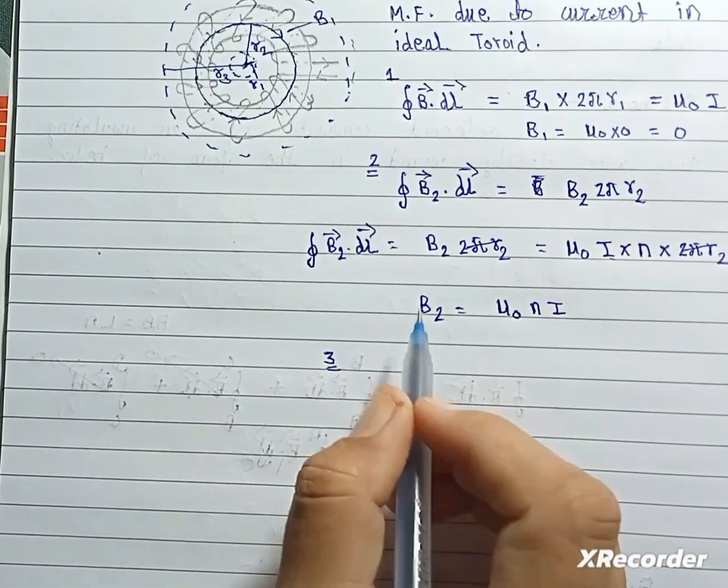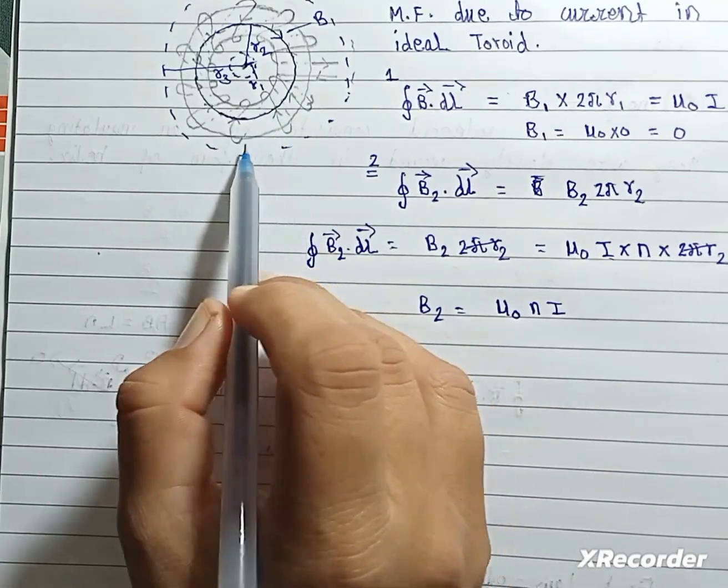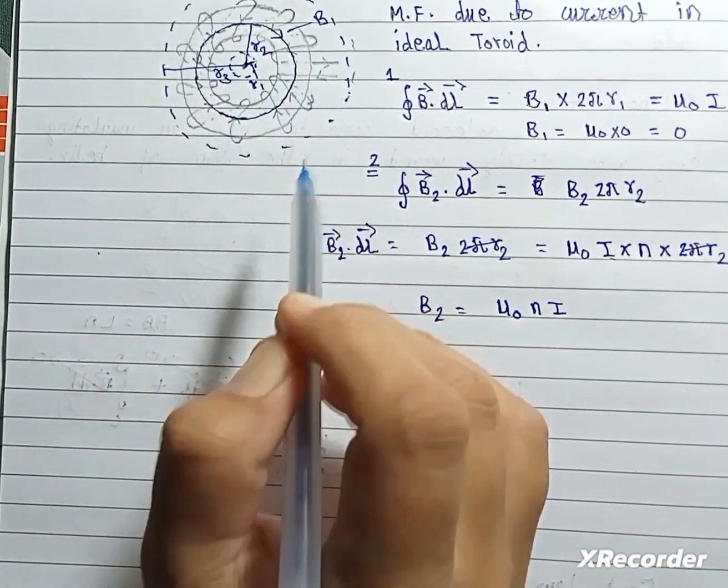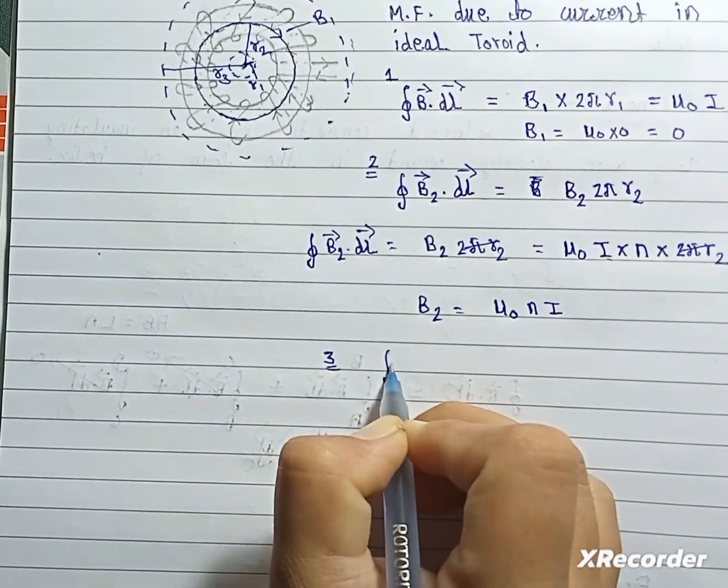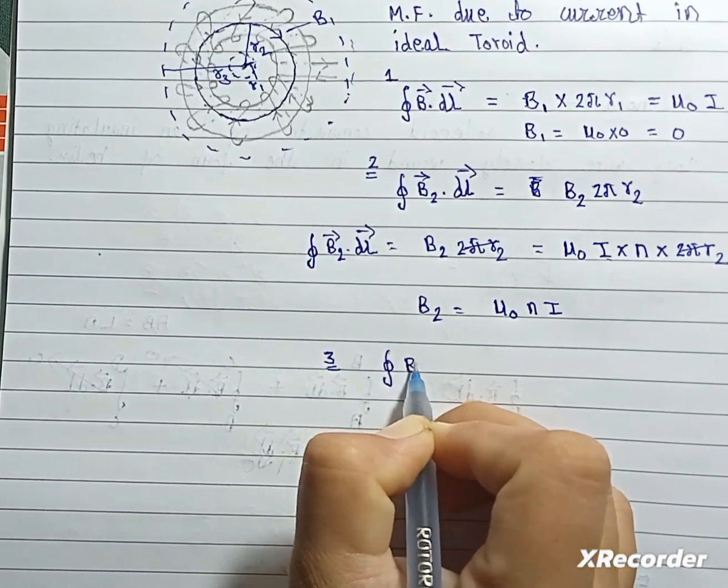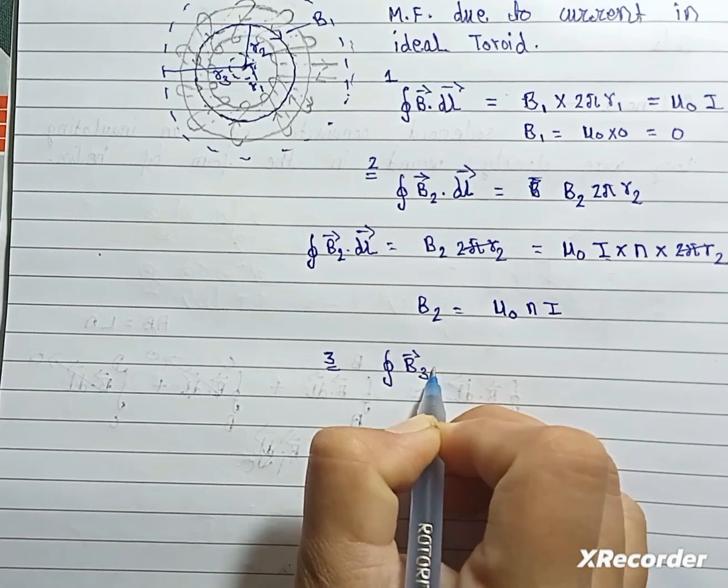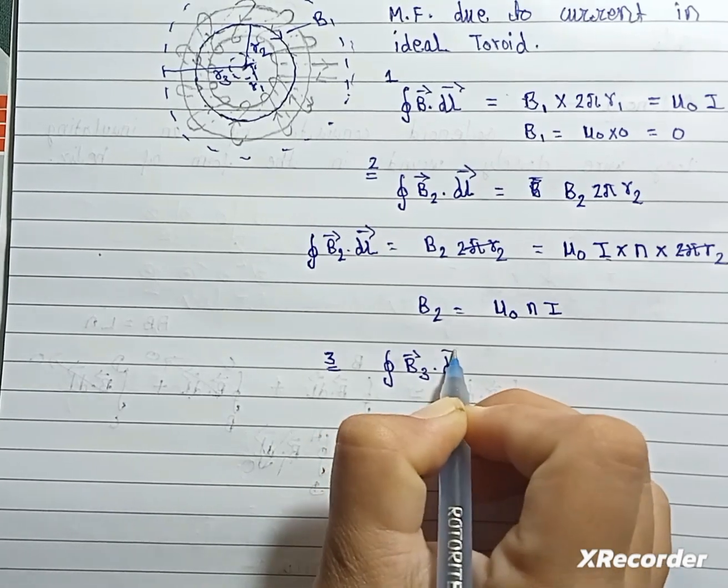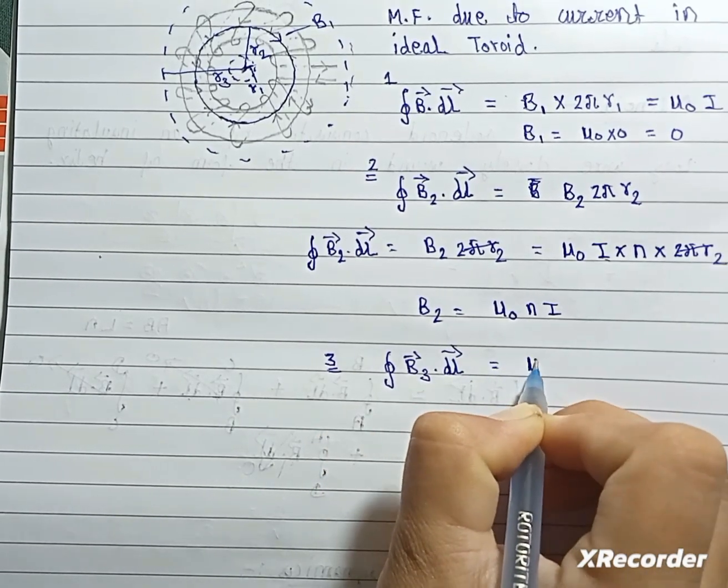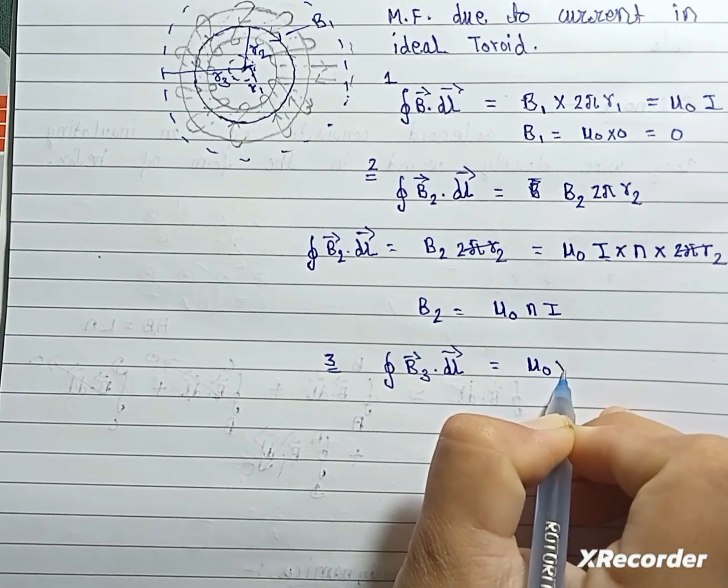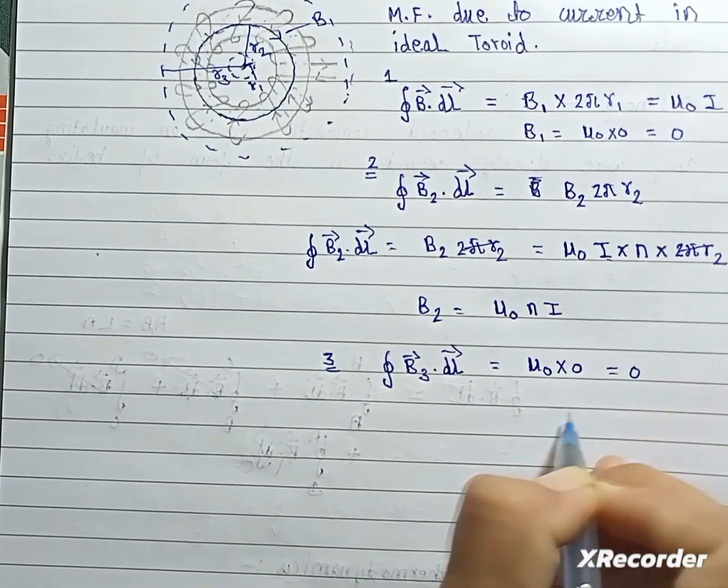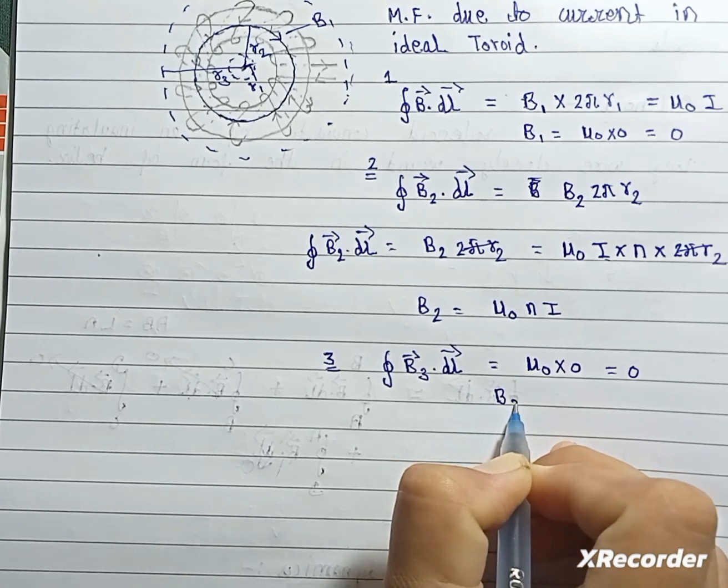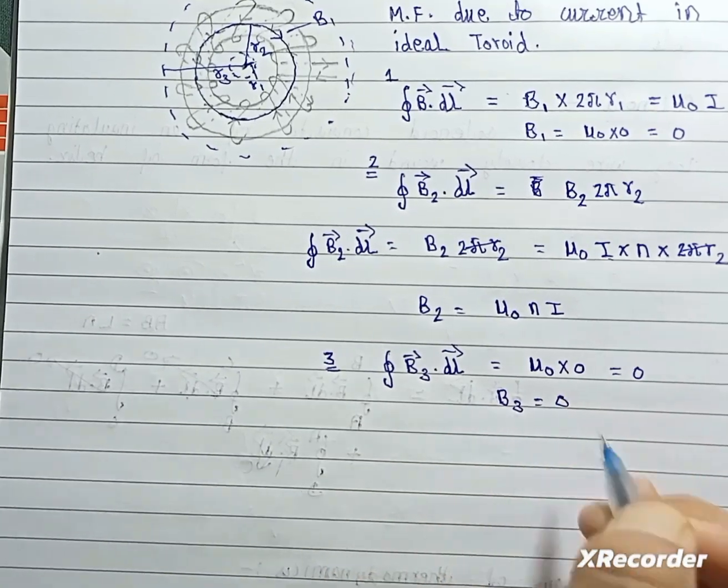For loop 3, B3 dot dL equal to μ₀I. I is 0, so this is equal to 0. B3 equal to 0.